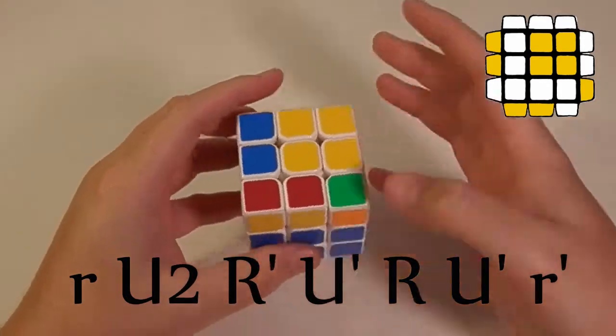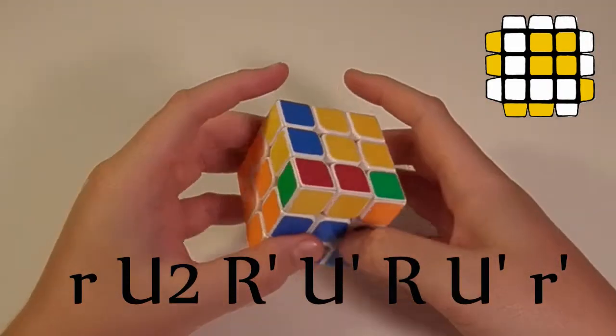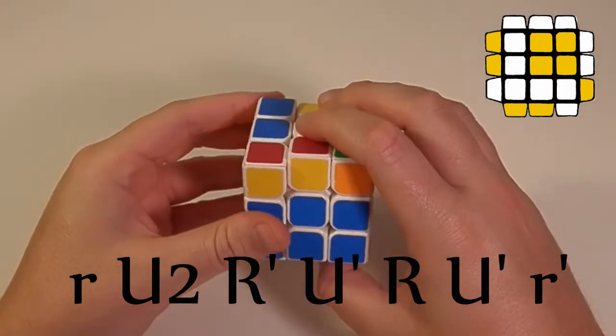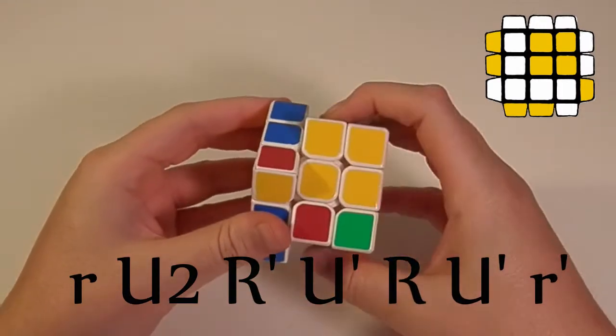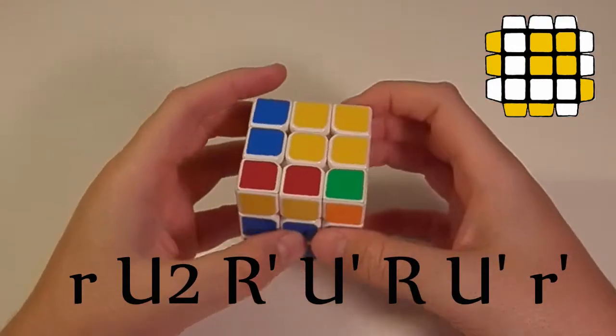Now this is very close to one of the anti soon algorithms we learned, the alternate case, in our first video. The only difference is, you do a small r at the beginning, and a small r prime at the end, rather than an r and then an r prime. And here's how you execute it.